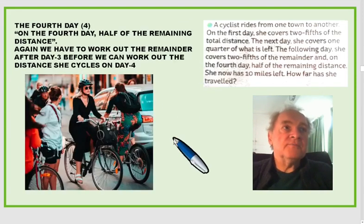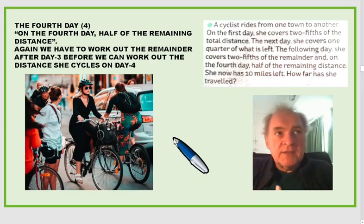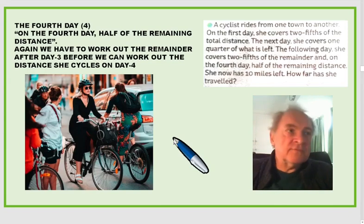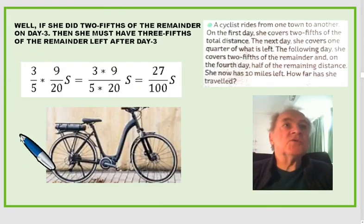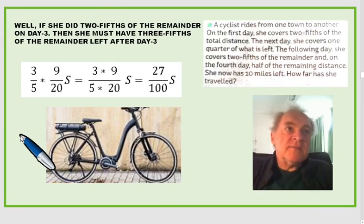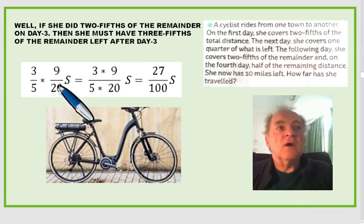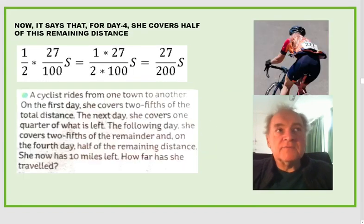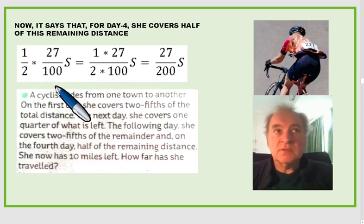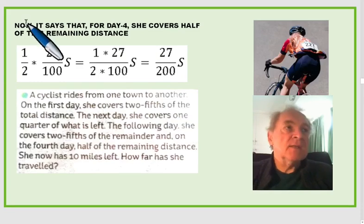The fourth day, half of the remaining distance. Again, we have to work out the remainder after day three before we can work out the distance she cycles on day four. If she did two-fifths of the remainder on day three, then she must have three-fifths of the remainder left after day three. So three-fifths of nine-twentieths is twenty-seven hundredths. It says that for day four she covers half of this remaining distance, so it's a half times twenty-seven hundredths, which is twenty-seven over two hundred. That's what she covers on day four.